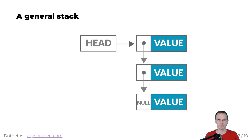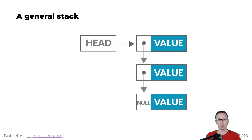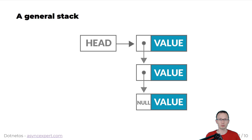A general stack looks like follows. There is a head — you can call it whatever you want — there is a single reference or pointer for unmanaged languages that points to a specific first top node. This node contains some value and has a pointer or reference to another one, one level lower. In this case we have three values in the stack. The final value has null in its next field, so once it's popped the stack will be empty. The very same rule is applied to a general construction of a concurrent stack.